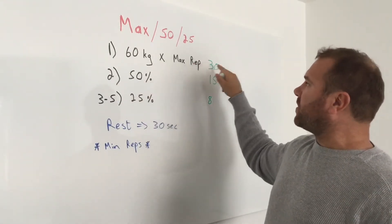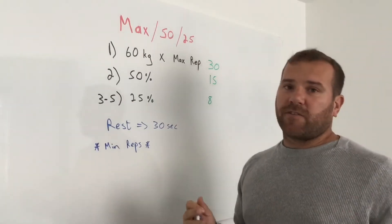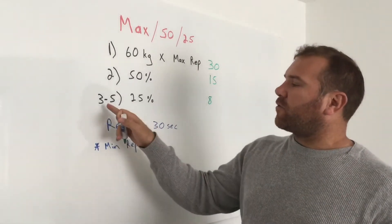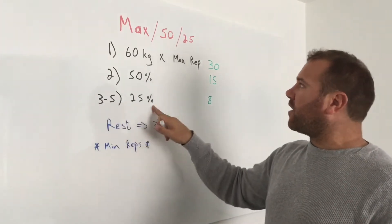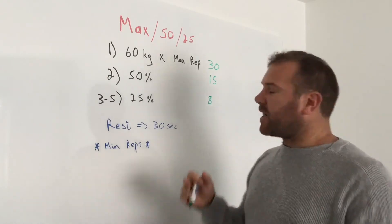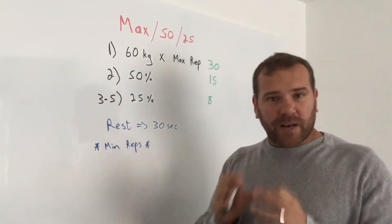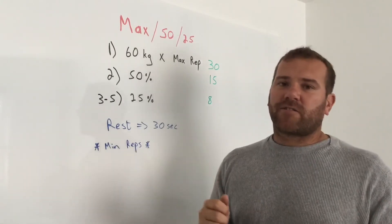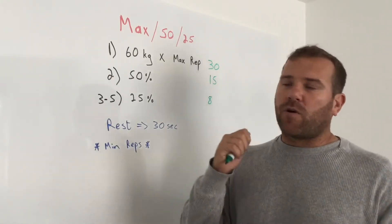50% of what you did, so we said it was 15, but 15 is the minimum target. 30 seconds rest, and then for rounds three, four and five you're doing 25% of your maximum, which in this case was 7.5 but we rounded up to 8. So minimum target is 8, try to do more. 30 seconds rest and then rounds four and five.